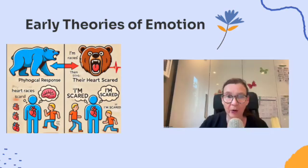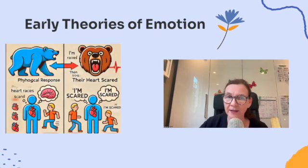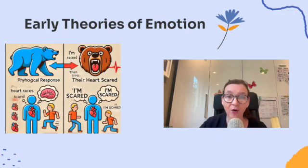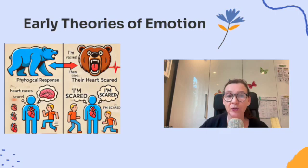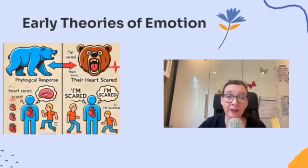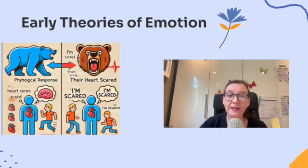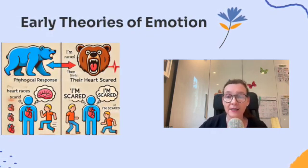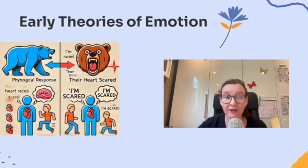Let's look at early theories of emotion — how psychologists have tried to explain the connection between our thoughts, feelings, and bodily reactions. Let's start with the big debate: does emotion come from the body or the mind? Early theories of emotion focus on the relationship between physiological responses, like your racing heart, and cognitive labeling, like recognizing fear. There are two ways these theories explain emotion. Sequential theories: first your body reacts, then your brain catches up to label the emotion.